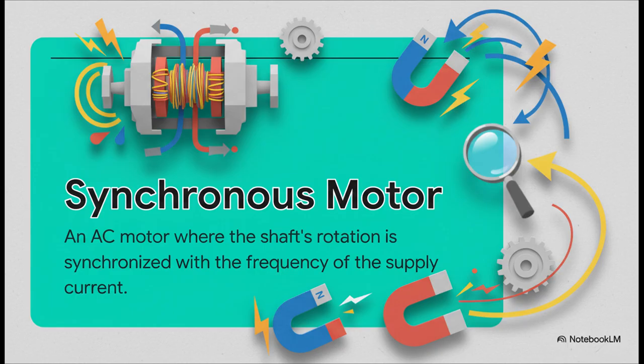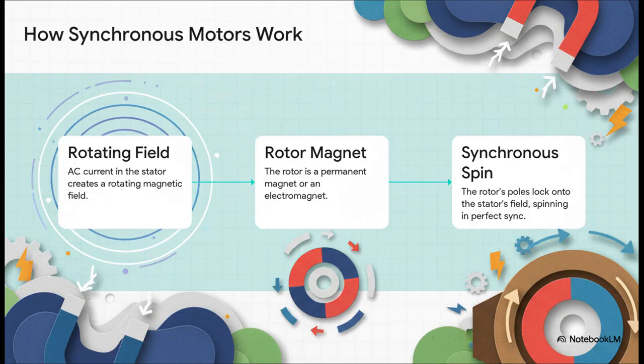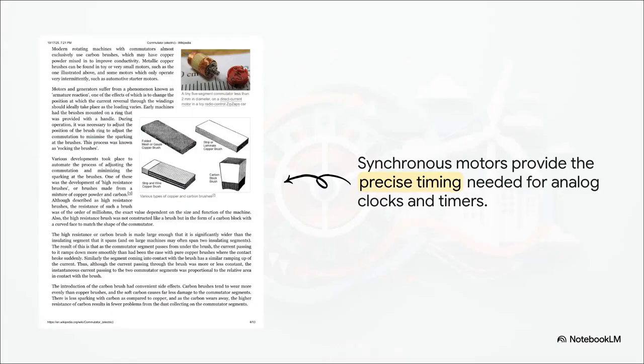First up, the synchronous motor. Its whole deal is precision. It spins in perfect time with the power. How? The rotor's magnetic field literally locks onto the stators, forcing them to spin together in sync. That precision makes them perfect for anything needing exact timing. You know, like analog clocks.